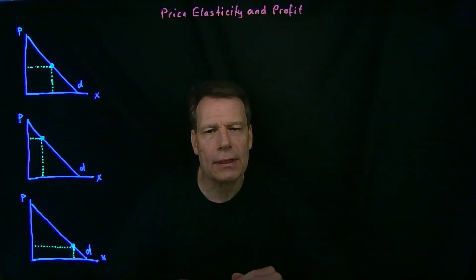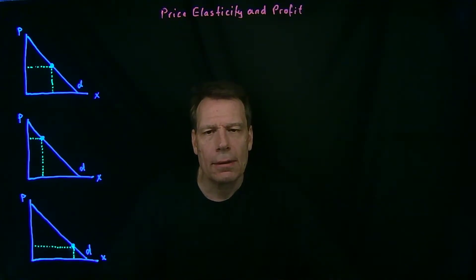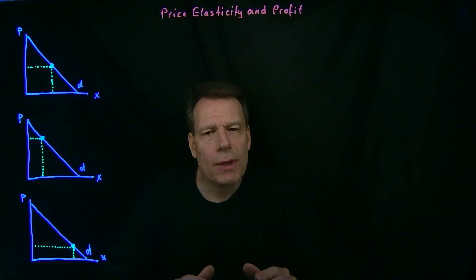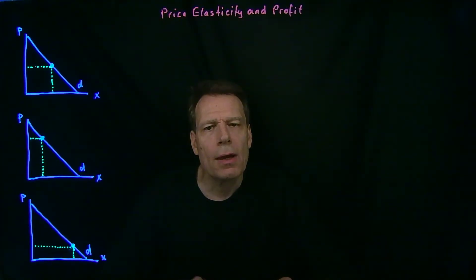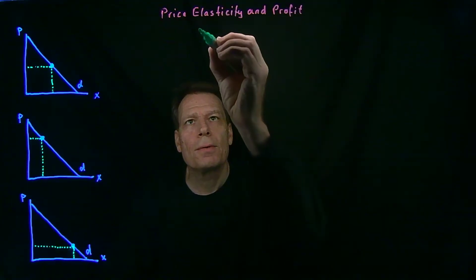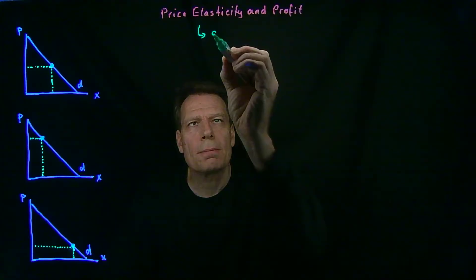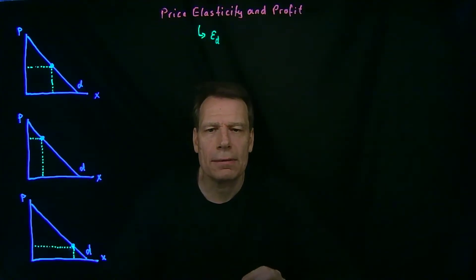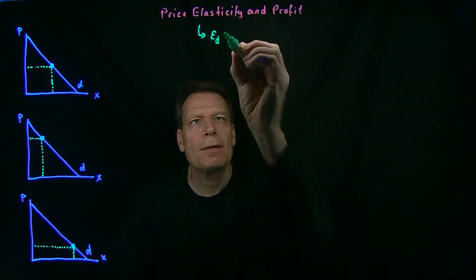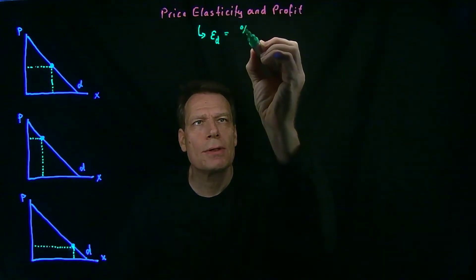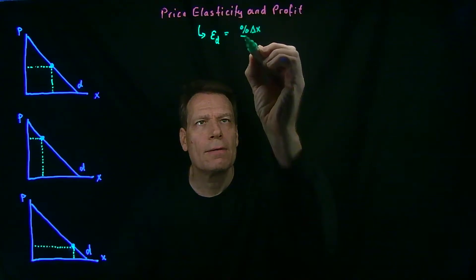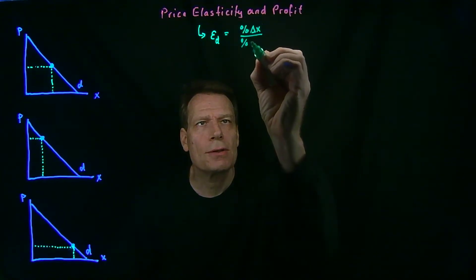We've seen that if the demand curve is perfectly horizontal, then consumers are perfectly price elastic. And if it's perfectly vertical, then they're perfectly price inelastic. But we haven't really been precise about how we measure price elasticity of demand. So let's define exactly what we mean by price elasticity of demand. We sometimes denote it by the script E with the subscript D, and we define it as the percentage change in quantity divided by the percentage change in price.